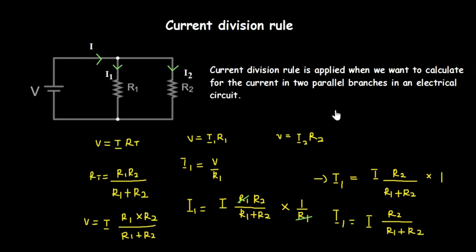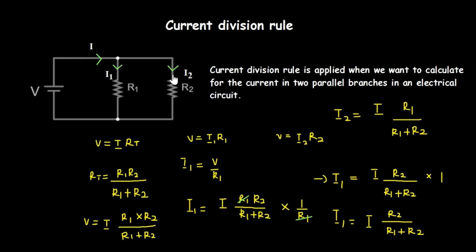The formula for i1 is: i1 equals i times R2 divided by R1 plus R2. In the same way, to find i2, you use the same formula but swap: i2 equals i times R1 divided by R1 plus R2. These are the two formulas you will use for the current division rule.